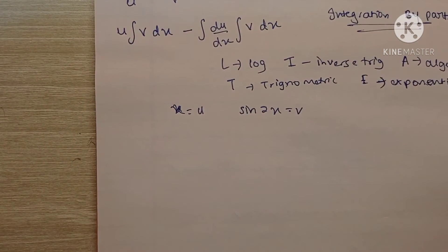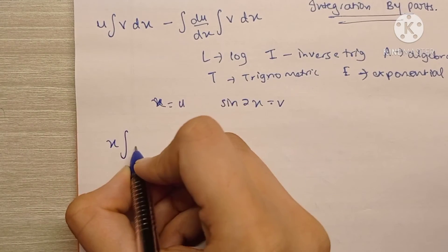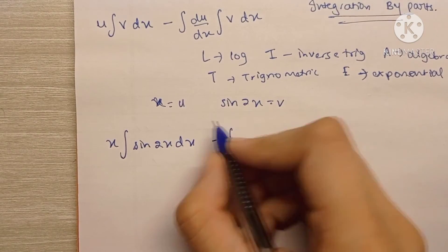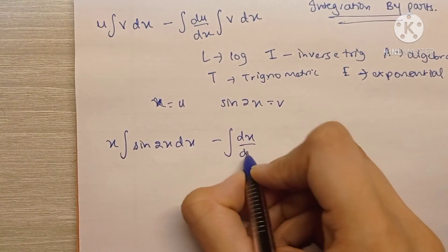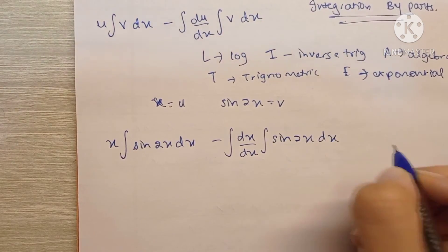Sorry the camera lost focus. So we have u, that is x, into the integration of sin 2x dx minus integration of dx by dx, which is going to be 1, into the integration of sin 2x dx.